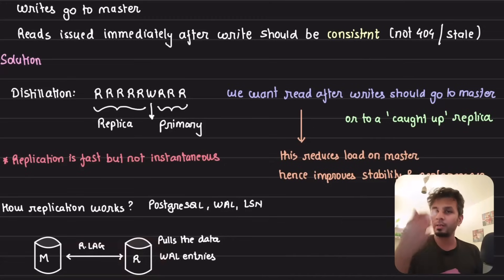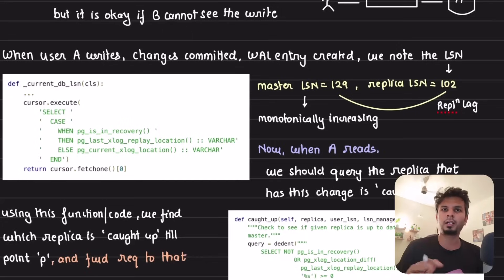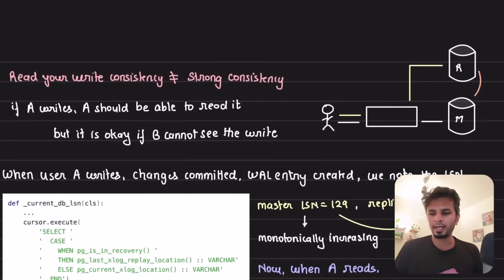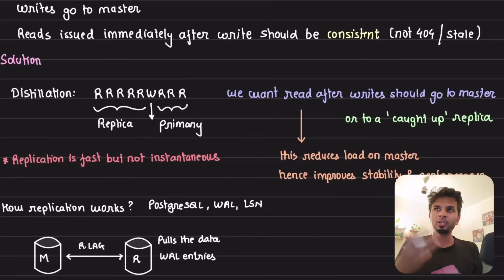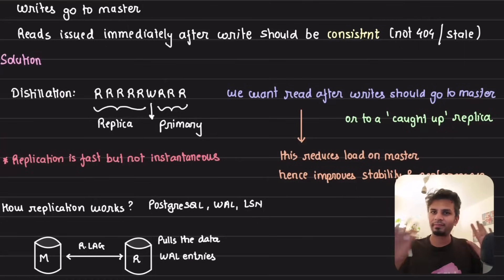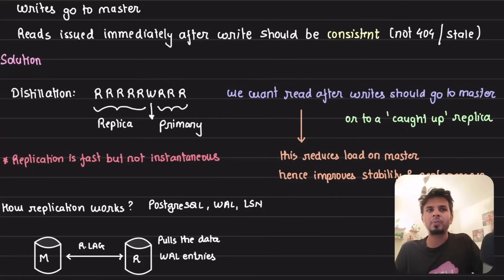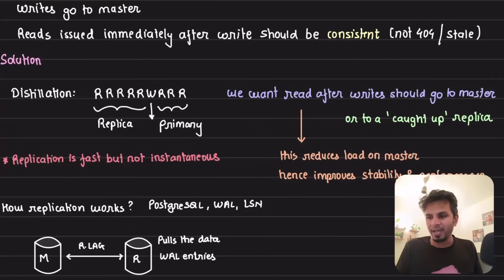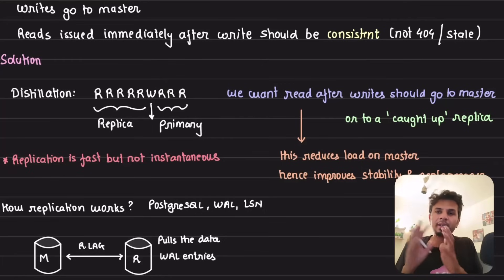The hint to the solution: for read-your-write consistency, once I have written something, subsequent reads should either go to master — which has the latest data — or to a replica that has been caught up with my changes. Bitbucket chose the second approach because master was overburdened. To utilize replicas well, they make sure that reads after writes go to replicas where those changes have already been replicated.